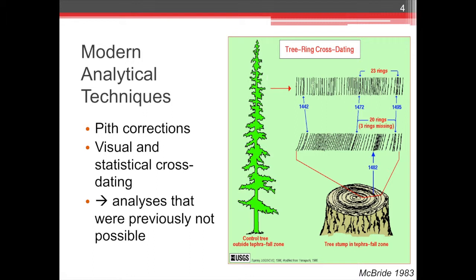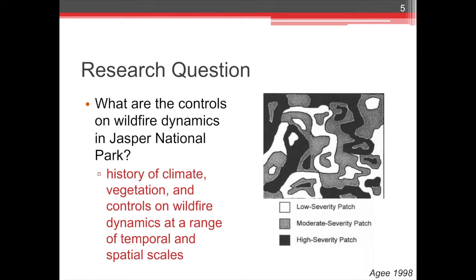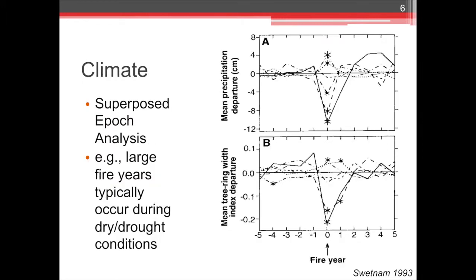With this high-resolution dataset, my research question is: what are the controls on wildfire dynamics? My reconstruction will go back to approximately the 1600s, giving a long temporal chronology, and also covers a broad spatial scale — about 400 square kilometers around the Jasper town site. The first control on wildfire dynamics I'll examine is climate — specifically fire-climate relationships. With an annually resolved dataset, I can run what is called a superposed epoch analysis, creating a sliding window around each fire event to analyze antecedent conditions before and after it.